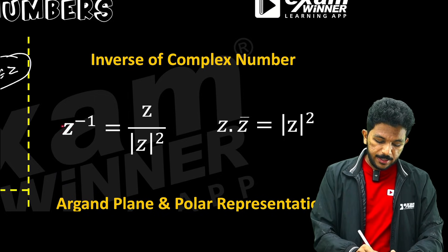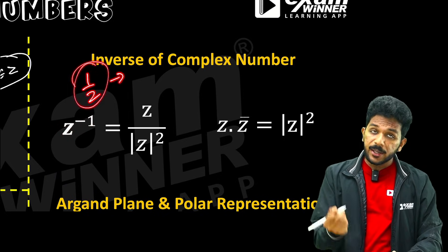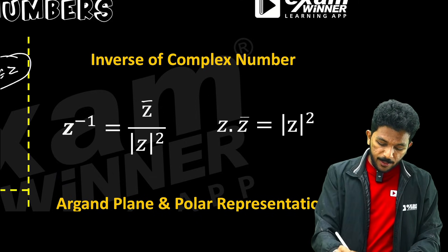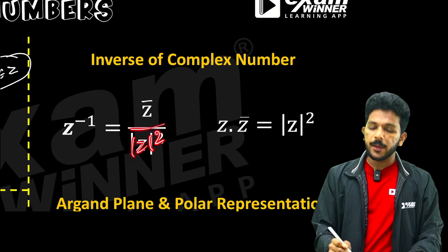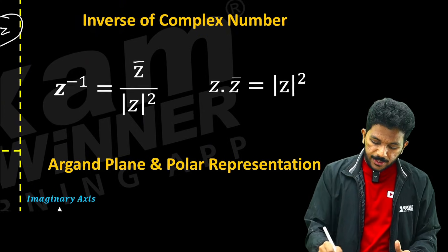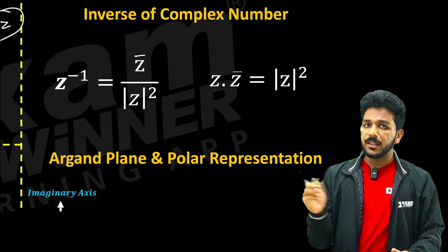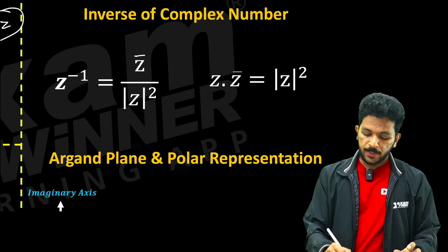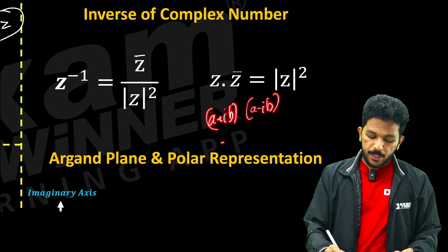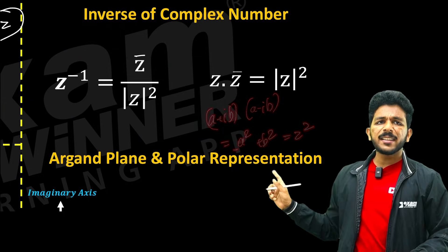Z inverse is 1 by z. In standard form, z inverse equals z-bar divided by mod z whole squared. This result is important to memorize. You can solve that complex number using: a plus ib times a minus ib equals a squared plus b squared. That means mod z squared — learn it by heart.